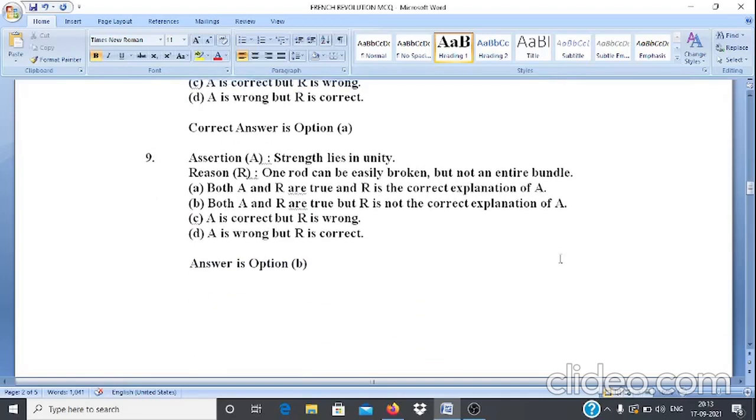Question 9. Assertion A: Strength lies in unity. Reason R: One rod can be easily broken but not an entire bundle. Here assertion and reason both are correct and reason is the correct explanation of A. That is why students are supposed to mark answer A as the correct option.